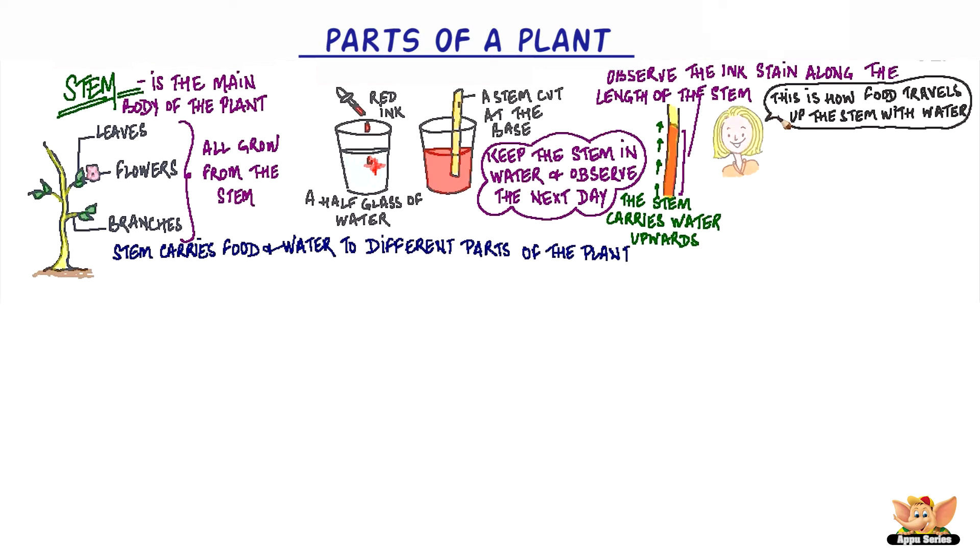This is how minerals essential for the plant travel up the stem along with the water. There are narrow tubes inside the stem that take the water and the minerals to the different parts of the plant.